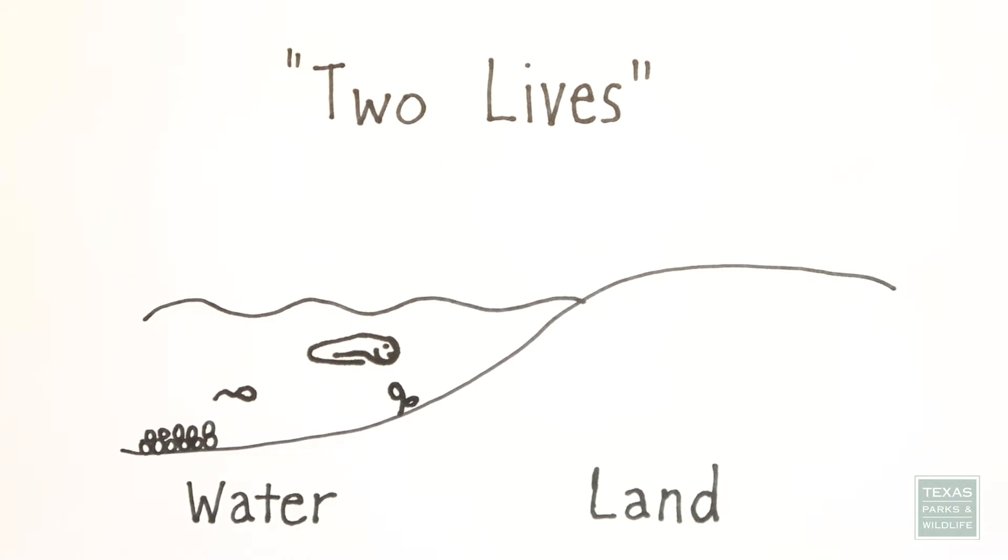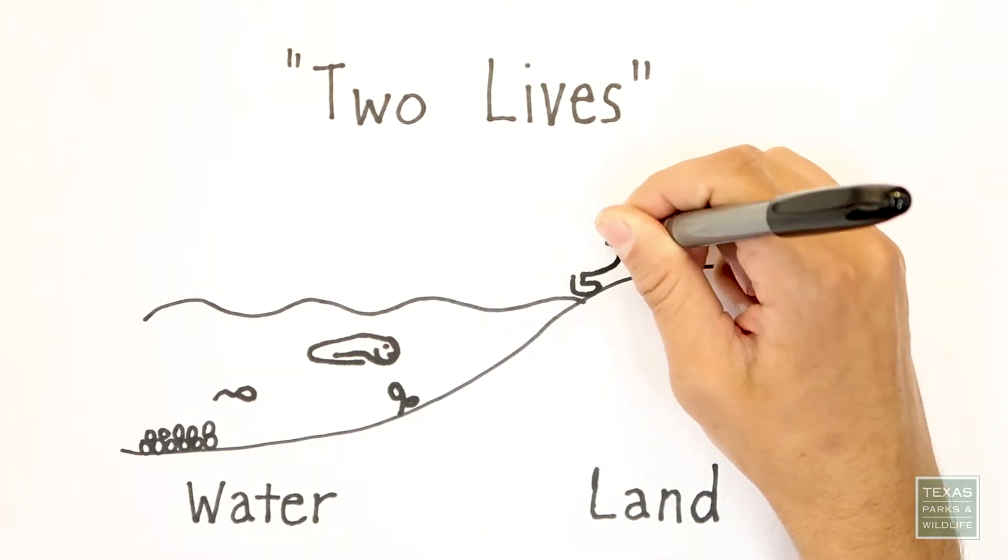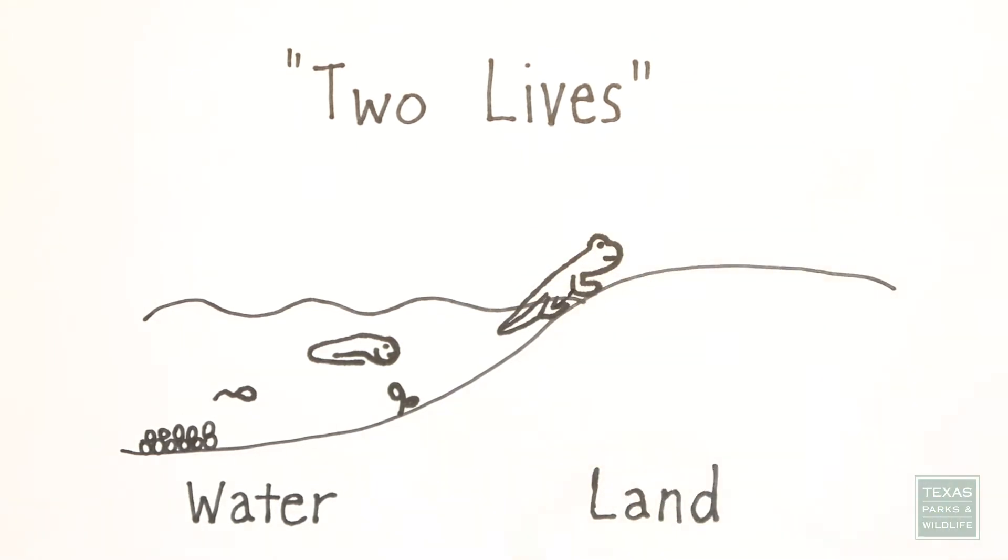But as they grow up, they begin to change. Frogs and toads lose their tails, grow legs, and they develop lungs to breathe air. Their intestines also change from digesting plants to digesting animals.